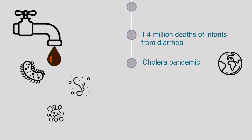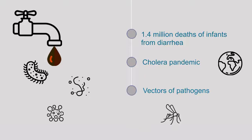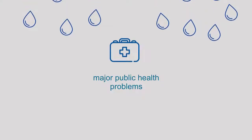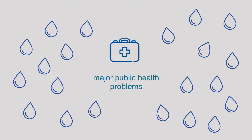Even in 2022, there is still an ongoing cholera pandemic in many parts of Africa, Southeast Asia and Central America. Water is also the preferred breeding medium for many vectors of pathogens such as mosquitoes. And these are only just a few examples of the major public health problems that waterborne diseases represent.